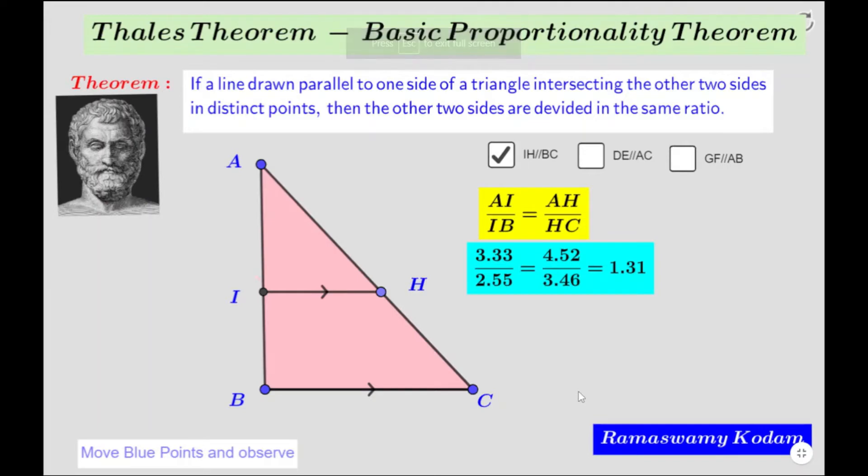Let us quickly recall what we have discussed in class about basic proportionality theorem or BPT theorem. It is also known as Thales theorem. BPT states that if a line drawn to one side of a triangle intersecting the other two sides in distinct points, then the other two sides are divided in the same ratio.